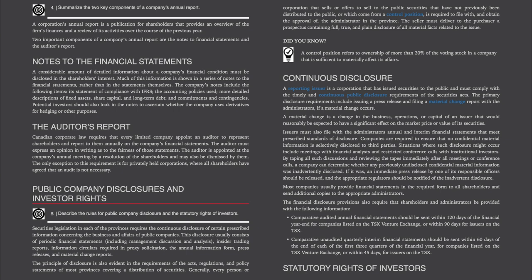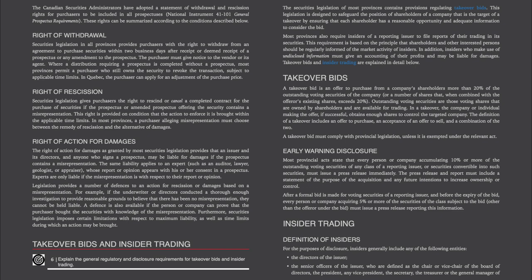Statutory Rights of Investors. The Canadian Securities Administrators have adopted a statement of withdrawal and rescission rights for purchasers to be included in all prospectuses, National Instrument 41-101 General Prospectus Requirements. Right of Withdrawal: securities legislation in all provinces provides purchasers with the right to withdraw from an agreement to purchase securities within two business days after receipt or deemed receipt of a prospectus or any amendment to the prospectus. The purchaser must give notice to the vendor or its agent. Where a distribution requiring a prospectus is completed without a prospectus, most provinces permit a purchaser who still owns the security to revoke the transaction, subject to the applicable time limits. In Quebec, the purchaser can apply for an adjustment of the purchase price.